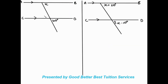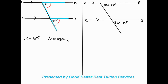Moving to the next example, we identify an F shape. The F tells us these are corresponding angles. The corresponding angles are beneath the parallel lines, so we write: x equals 60 degrees. Reason: corresponding angles; AB is parallel to CD. And just like that we have our answer.